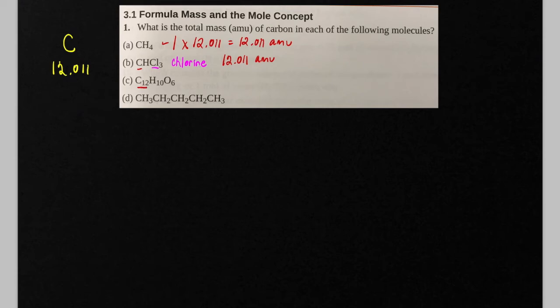Now this next molecule has a subscript of 12 in this formula, C12H10O6. So there's 12 carbons here, so we need to multiply the average atomic mass of one carbon by 12, and grab your calculator and go ahead and do that.